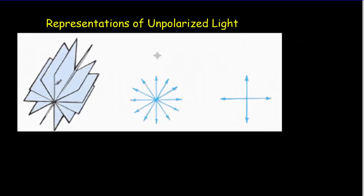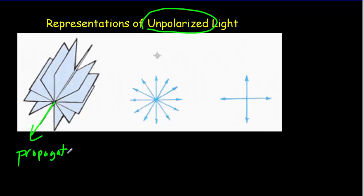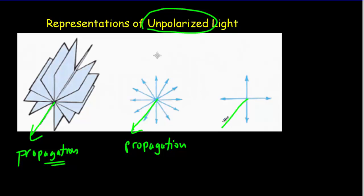How are we going to represent and draw polarized and unpolarized light? The most complicated way shows all the planes — that's a 3D version. A simpler drawing shows lots of planes in which the electric field is oscillating, with a direction of propagation coming out of the board. We can simplify further because all the planes where the electric field oscillates can only have vertical or horizontal components, so we just represent it with horizontal and vertical directions.